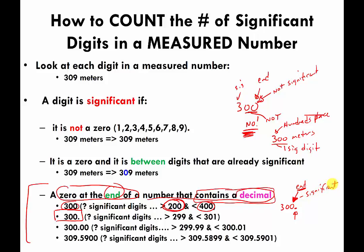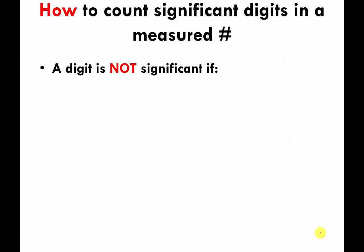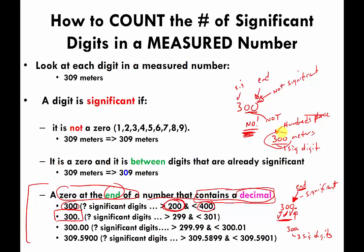With 300 written with a decimal point, the 3 is significant, the last zero is significant, and by the sandwiched-zero rule the middle zero is also significant. So 300 with a decimal point has three significant digits. This means the measurement is more precise — it tells people the measurement is good down to the ones place, meaning the distance is more than 299 and less than 301.